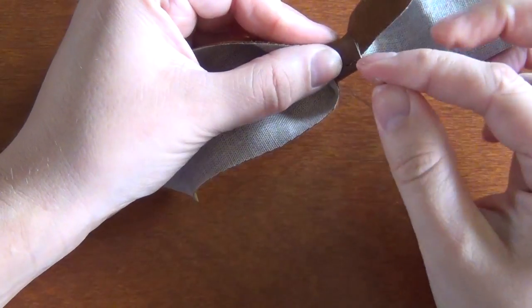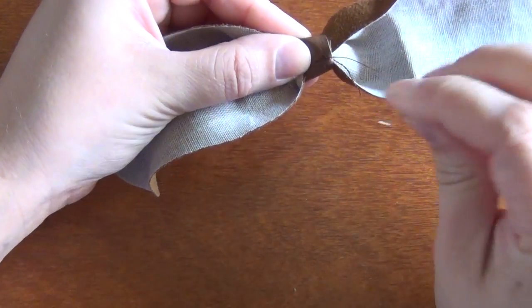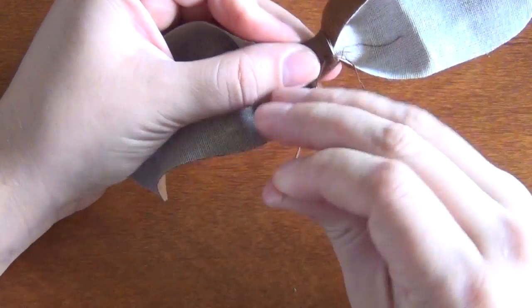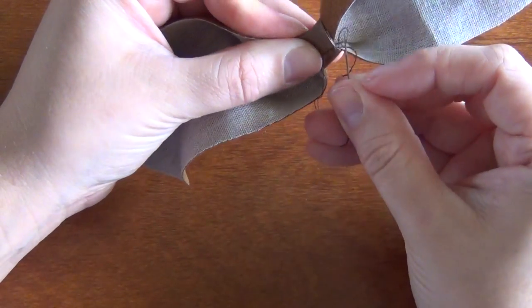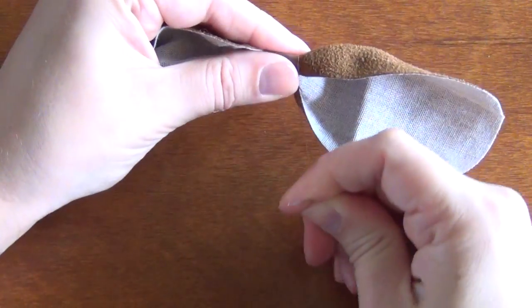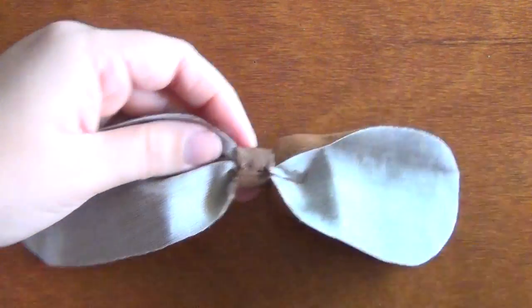Stitch through a few more times and then work your way back to the area where you started. Then you can do the exact same thing when you're finishing off your stitching. Before you pull the thread all the way through, put your needle through the loop and you can just snap off that thread.